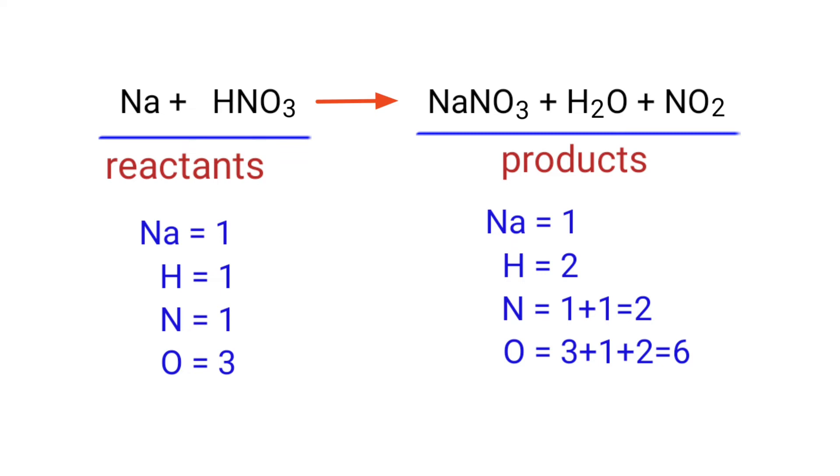The number of atoms are not balanced on both sides. To balance the chemical equation we need to make use of coefficients. A coefficient is a number that we place in front of a chemical formula.